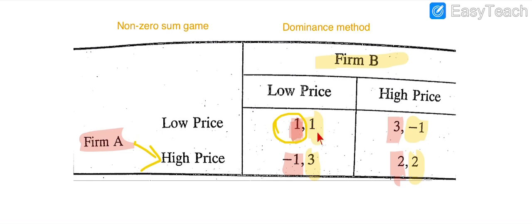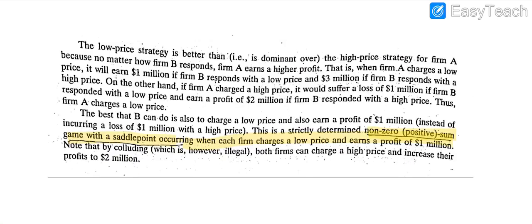If Firm A adopts low price and Firm B also adopts low price, both firms will earn 1 million dollars each. In the case where Firm A adopts low price and Firm B adopts high price, there will be a loss for Firm B. And if both adopt the high price, both will earn 2 million dollars each. But in that case consumers will be affected, so the best strategy is that both adopt the low price.